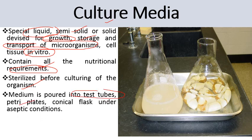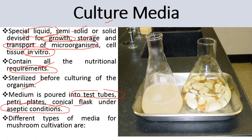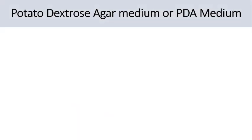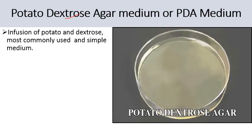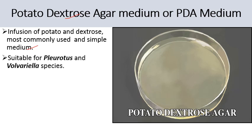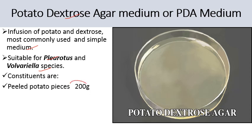We use different types of media for mushroom cultivation. The first medium is potato dextrose agar (PDA) medium. This medium is an infusion of potato and dextrose, and is most commonly used as a simple medium for the growth of Pleurotus and Volvariella species. Its constituents are: 200 grams of potato slices, dextrose 20 grams, agar agar 20 grams, and distilled water 1000 ml.